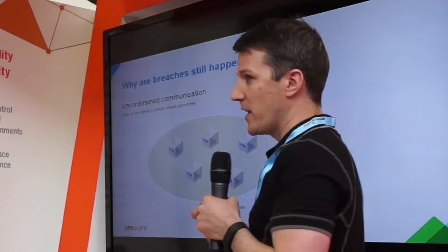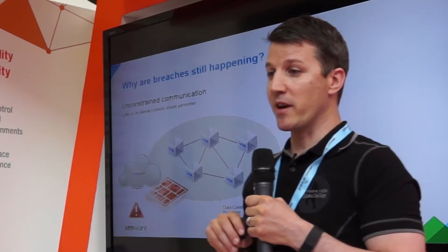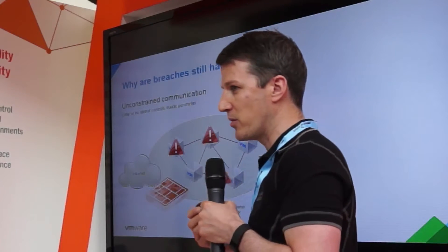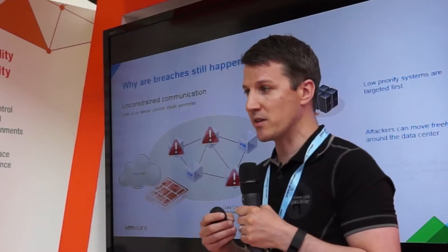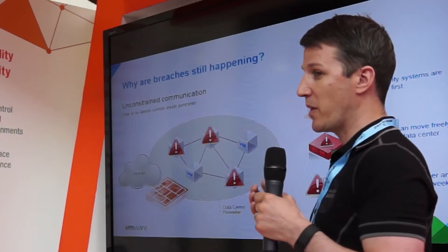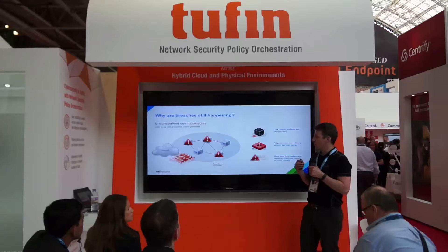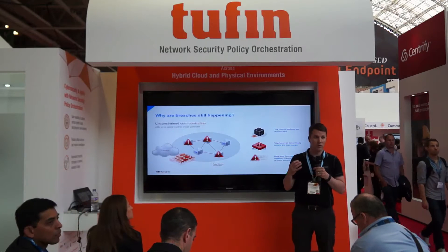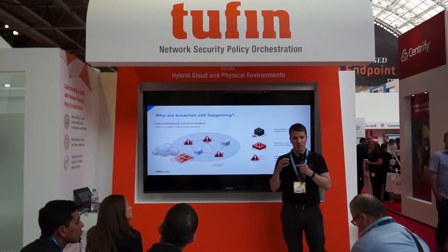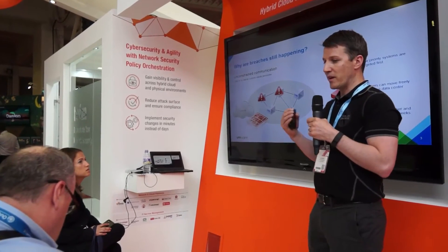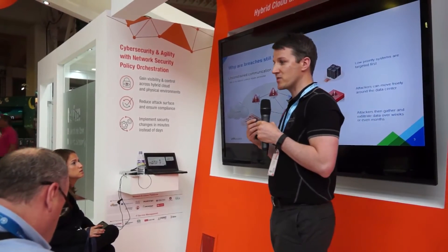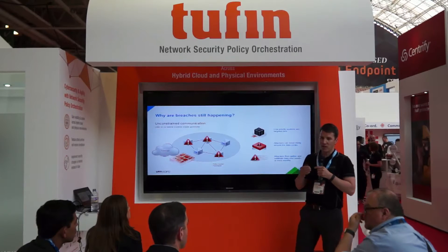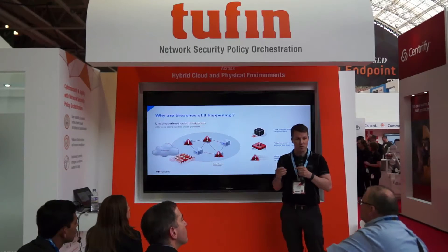Throughout this exhibition you'll hear about why breaches are occurring. If you look at the traditional way of providing network security in the data center, it very much focuses on the perimeter-based approach. With the perimeter-based approach it protects your north-south border, and we have a lot of good vendors here that provide application layer context for that north-south border. But once an attacker is inside the data center, there's typically little or no lateral controls to protect against attackers moving east-west within that data center.